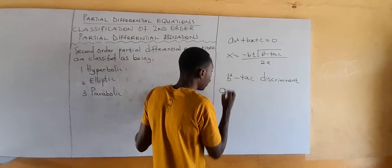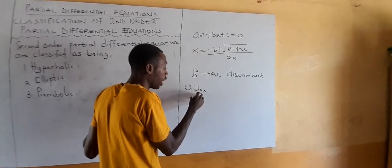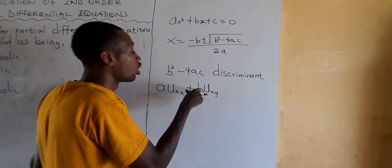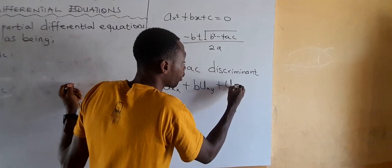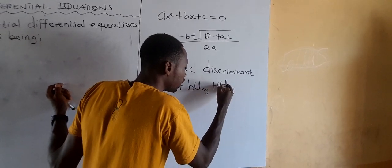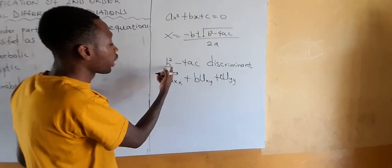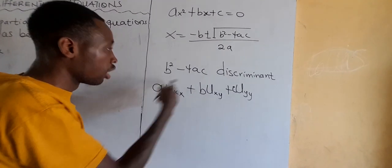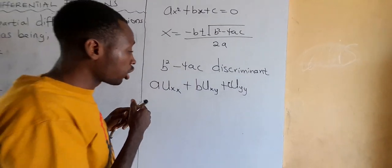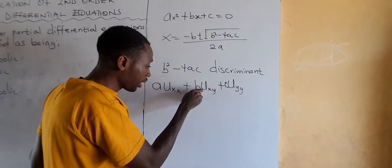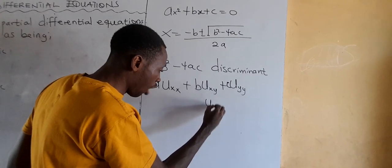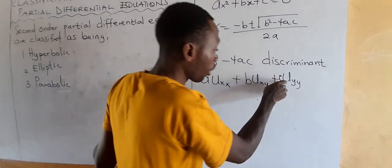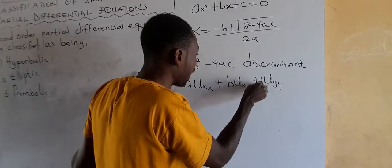When we want to classify partial differential equations, we will not consider any other form — we will just consider the second order partial derivatives. So from the general form, we consider: the partial derivative of U with respect to x twice with coefficient A, plus the partial derivative of U with respect to x then with respect to y with coefficient B, plus the partial derivative of U with respect to y twice with coefficient C. That is what we use. From Young's theorem, the mixed partial derivatives are the same, so the coefficient B applies to both.